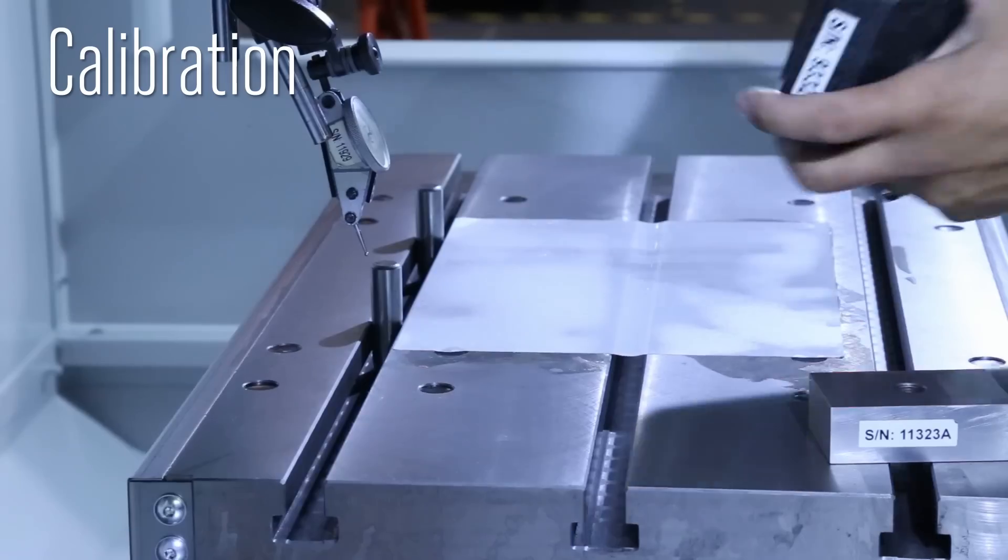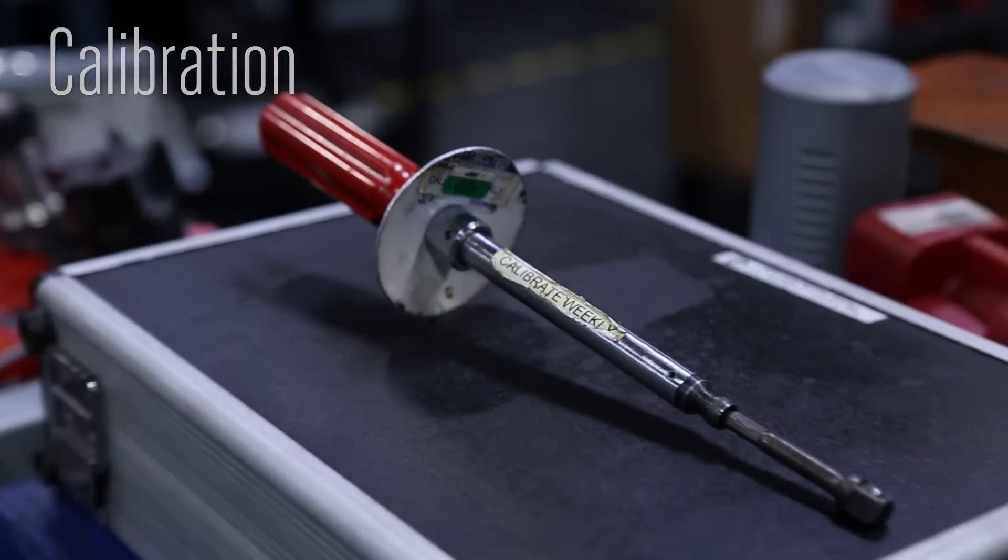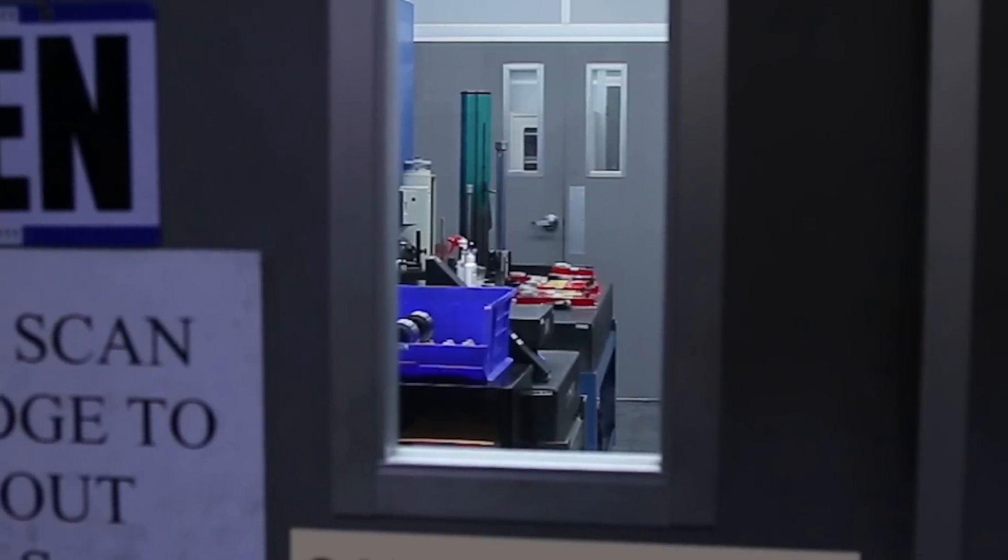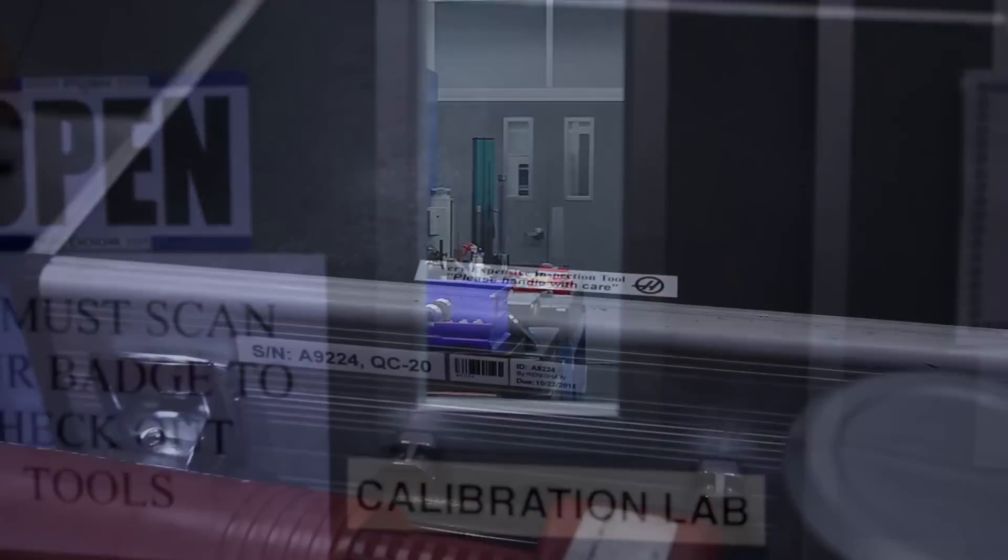At Haas, we routinely calibrate the company's supplied indicators. It's a best practice that keeps our indicators accurate. You'll find the next recalibration date printed on the indicator's case.